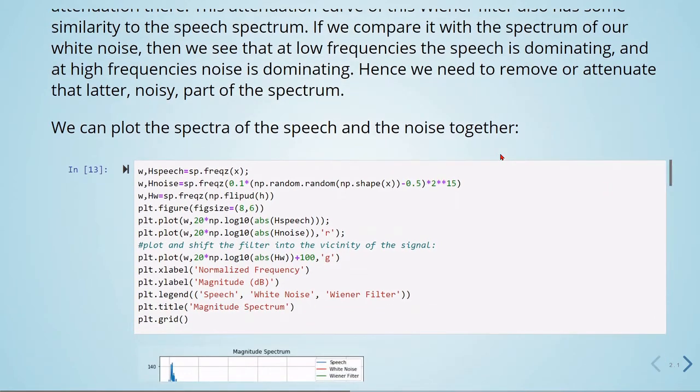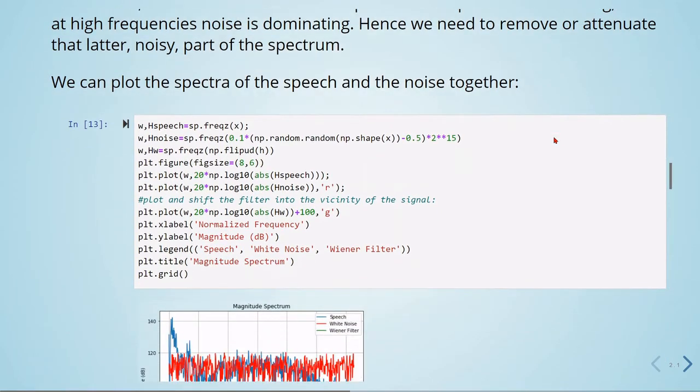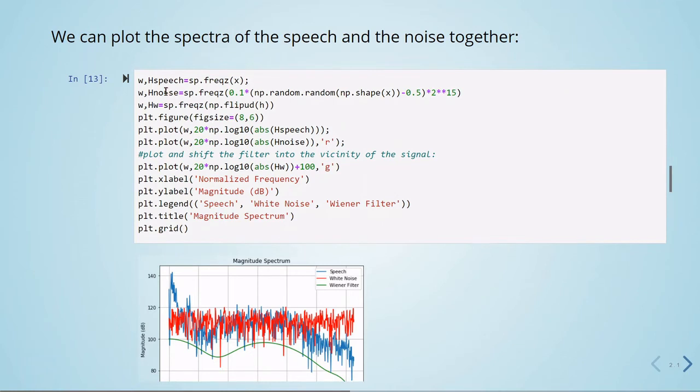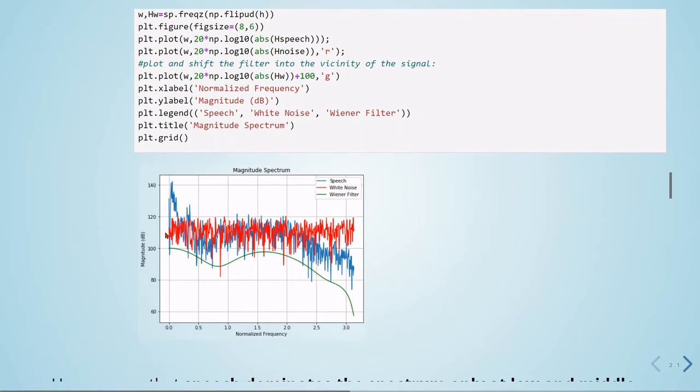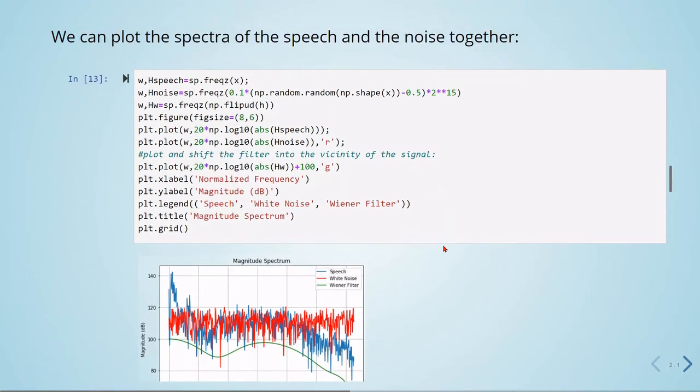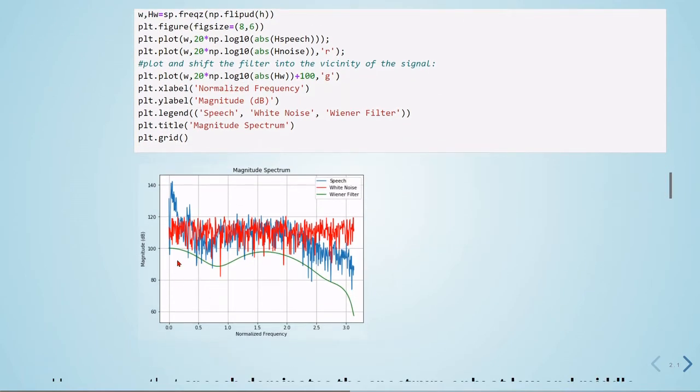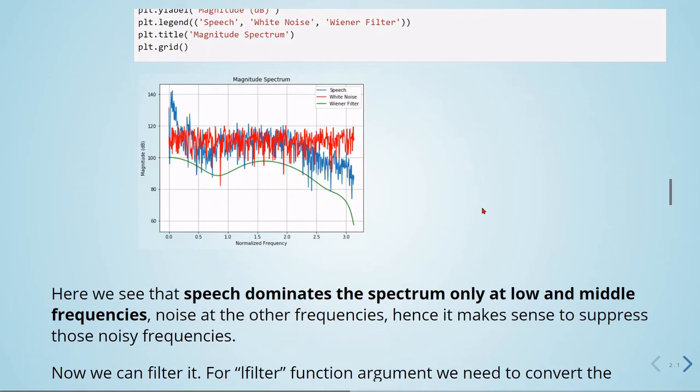So here we can plot the spectra of speech and noise together. We have speech, noise. Here in red is the white noise spectrum, here we have our speech spectrum in blue, and also we are plotting the Wiener filter. We're just giving it some shift to get closer, and we can see it has some shape that kind of goes along with the speech.